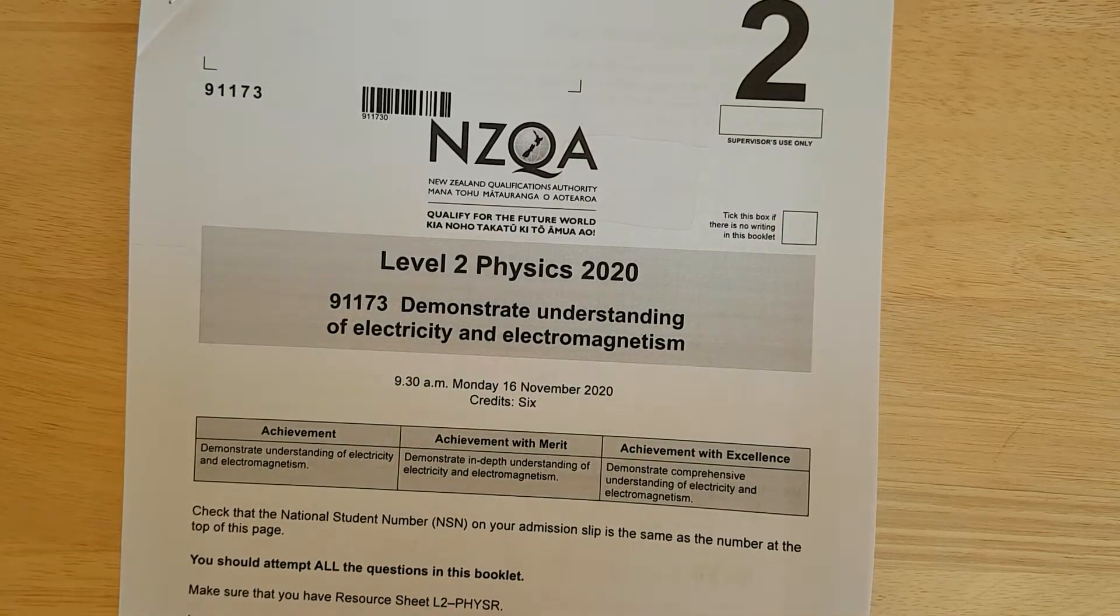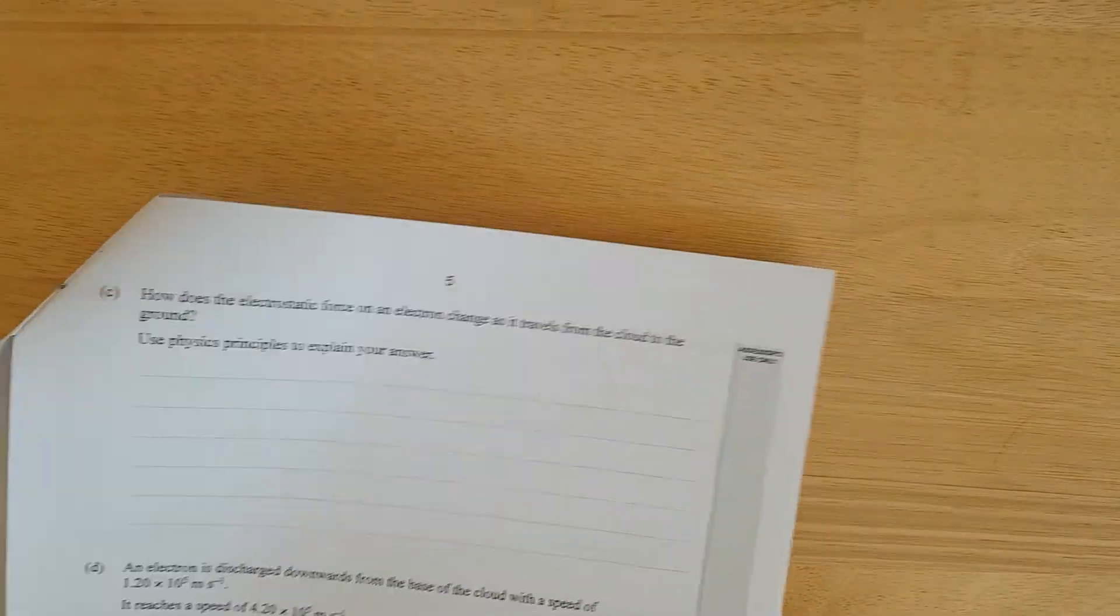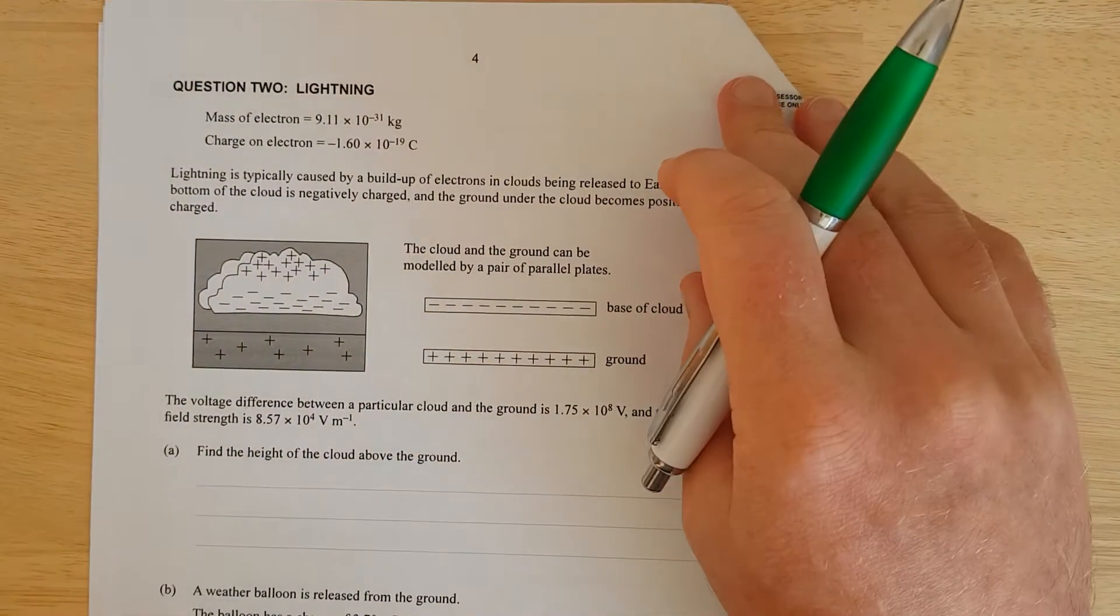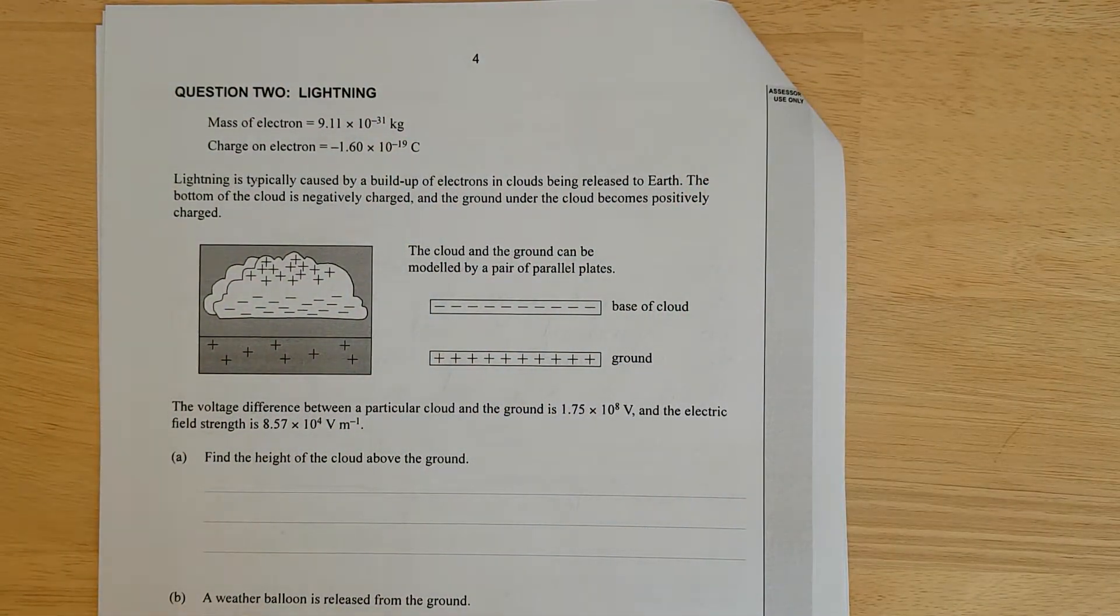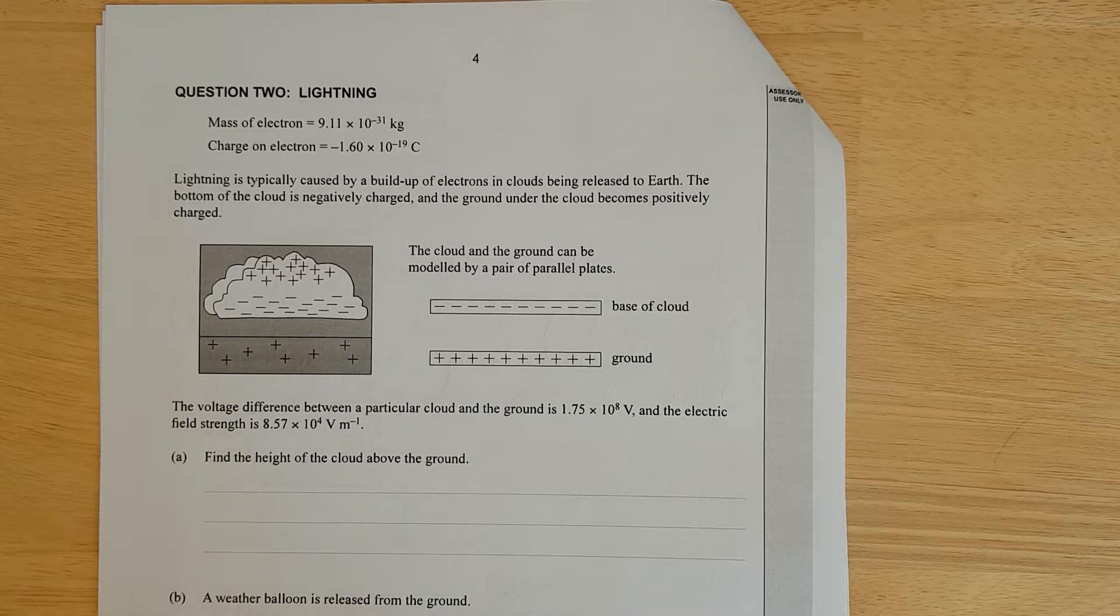This is question 2 of the 2020 Electricity Exam Level 2. We have lightning typically caused by build-up of electrons in a cloud being released to the earth. The bottom of the cloud is negatively charged and the ground under the cloud becomes positively charged. The cloud and the ground can be modelled using a pair of parallel plates.